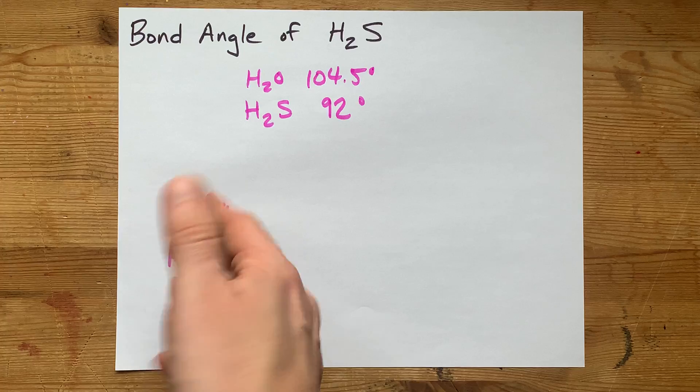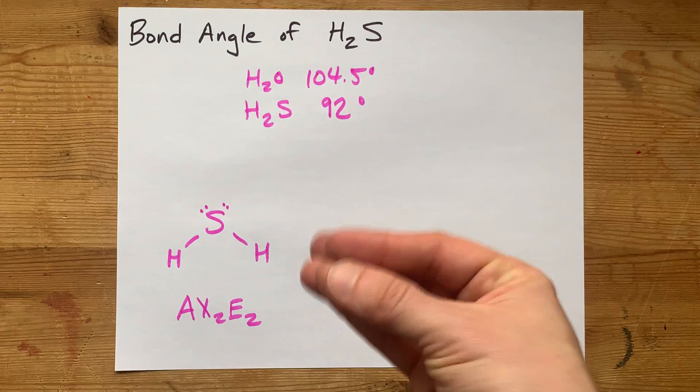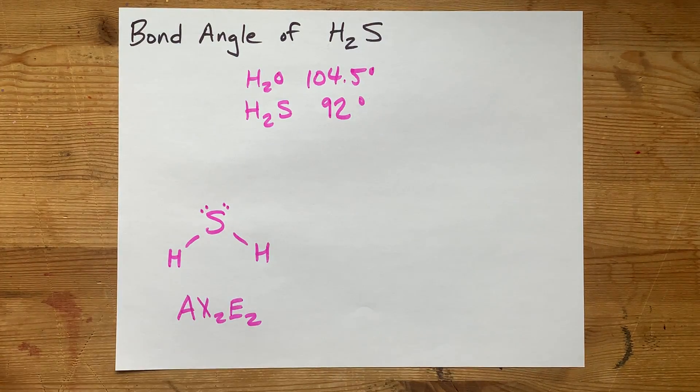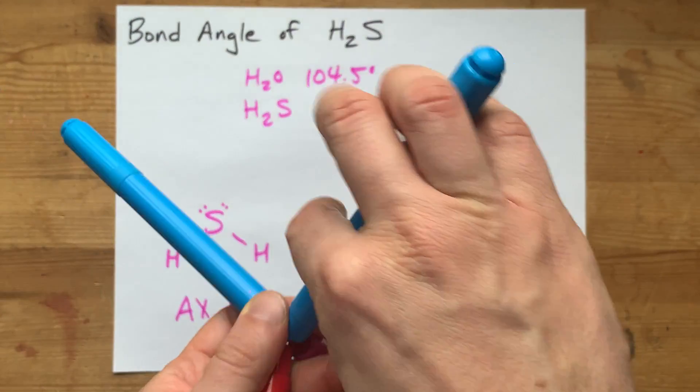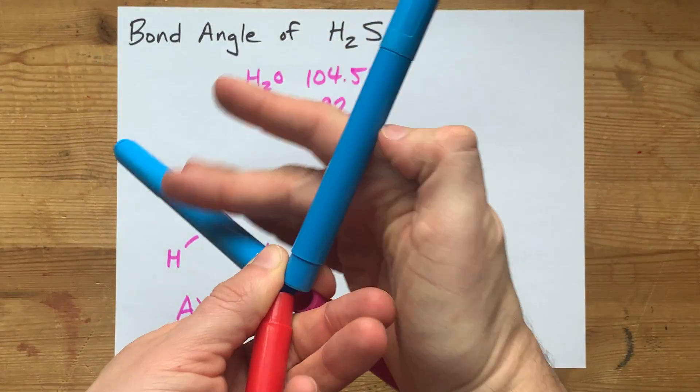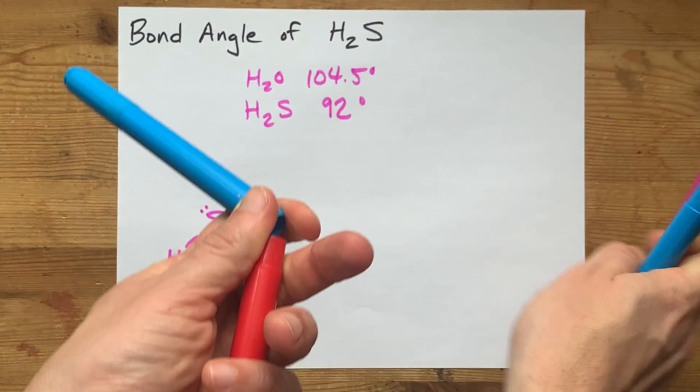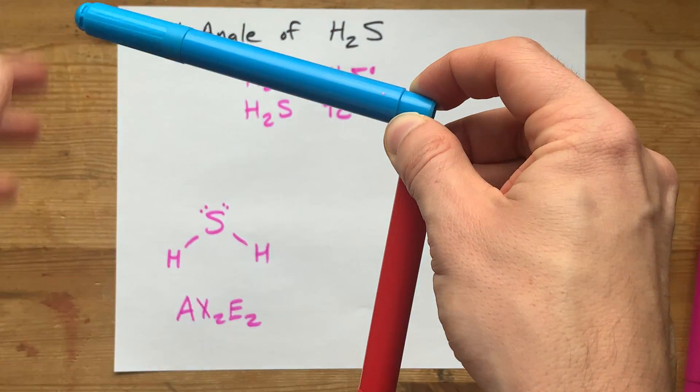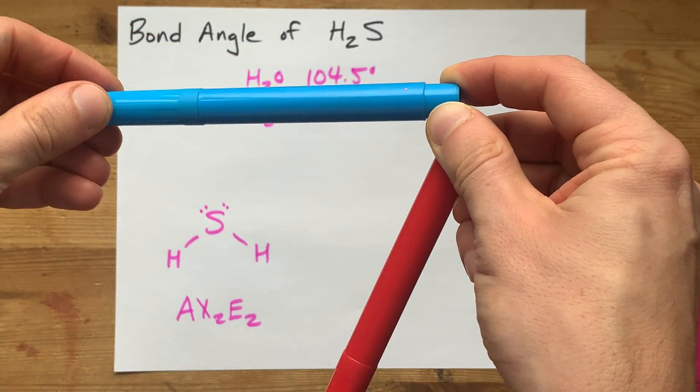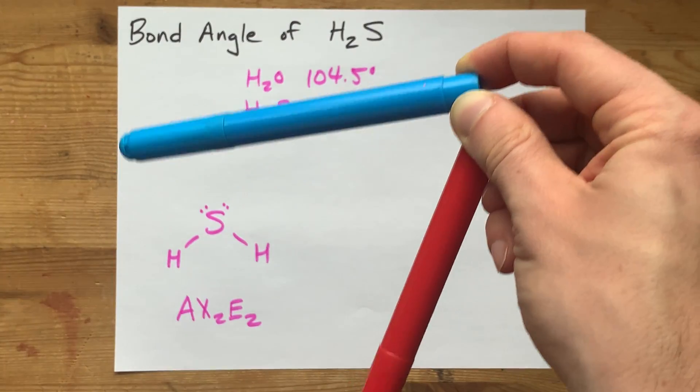Two of them are lone pairs, which don't really take up any physical space, but there is the probability that electrons can be there. So how far apart can four things get? The answer is tetrahedral, but lone pairs don't really count towards molecular shape, and those lone pairs push the two hydrogens together slightly because lone pairs simply take up more space than bonding pairs do.